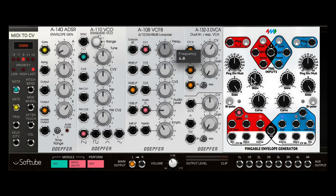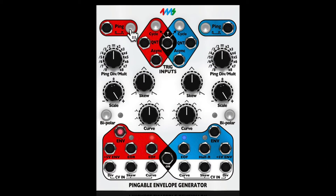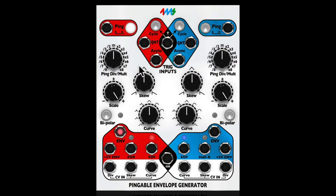How this envelope works is you need to define a ping time — kind of like a tap tempo feature. You tap on this button to define how long the envelope is going to be, and you can see it's pulsating. That is the length of the envelope that's going to be generated on the red side. Let's have a listen.